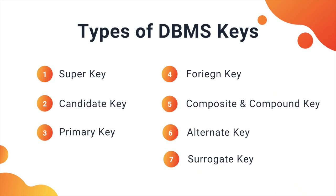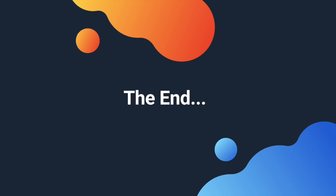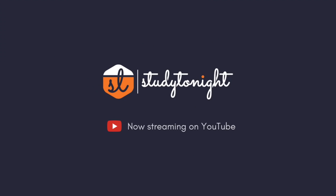With this we have covered all the DBMS keys — starting from super key, candidate key, primary key, alternate key, foreign key, composite and compound key, and surrogate key. I hope after watching this video you have a better understanding of what DBMS keys are, why they are required, and the various different types of DBMS keys. If you liked this video, give it a thumbs up, share it with your friends, and do not forget to subscribe to the Study Tonight YouTube channel.